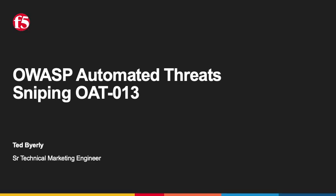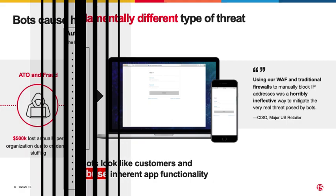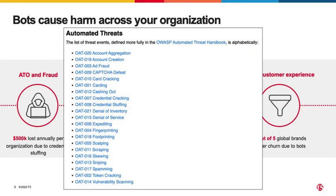The OWASP Automated Threats to Web Applications project was completed and identified, named, and classified various scenarios where automated software caused a divergence from accepted behavior, producing one or more undesirable effects on a web application. Web applications are subjected to unwanted automated usage day in, day out. Often these events relate to misuse of inherent valid functionality, rather than the attempted exploitation of unmitigated vulnerabilities, which WAFs were designed for. The OWASP Automated Threats Handbook lists 21 categories that exist today and are listed here for reference.